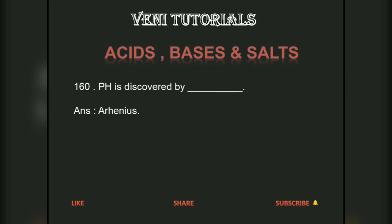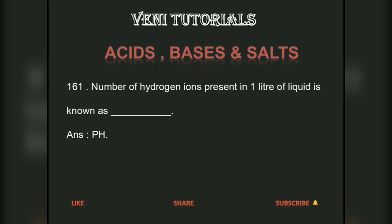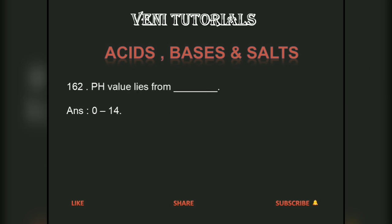pH was discovered by dash — answer: Arrhenius. The number of hydrogen ions present in one liter of liquid is known as dash — answer: pH. pH value lies from dash — answer: 0 to 14.